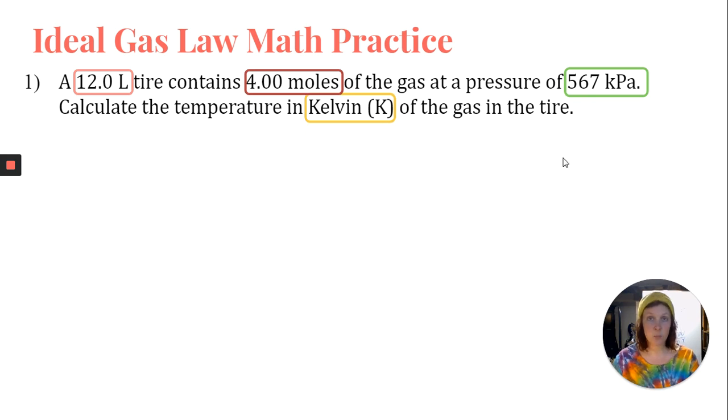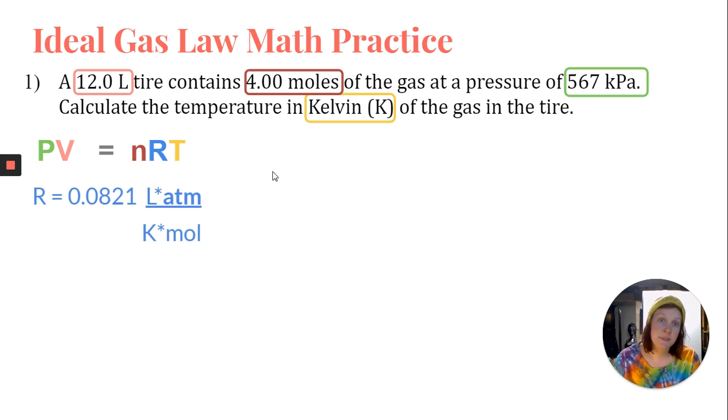Now keep in mind, guys, if you look at this word problem, we don't have two sets of variables. We don't have two volumes and two sets of moles and two pressures. We only have one of everything. And so that's one of the tricks that you can use to decide whether you're using the combined gas law or you're using the ideal gas law. In this instance, we are using the ideal gas law, which is PV equals nRT. We only have one of everything. We have volume, number of moles, pressure, and we're looking for Kelvin. And remember, guys, R is a constant, and that's something that's always provided for us. This is going to be provided for you on your test next week.